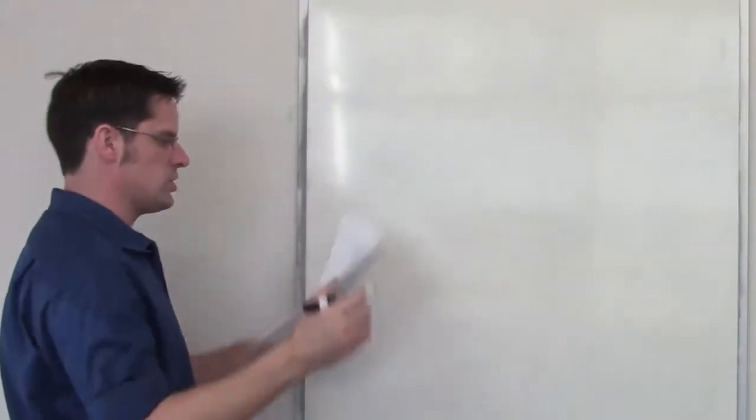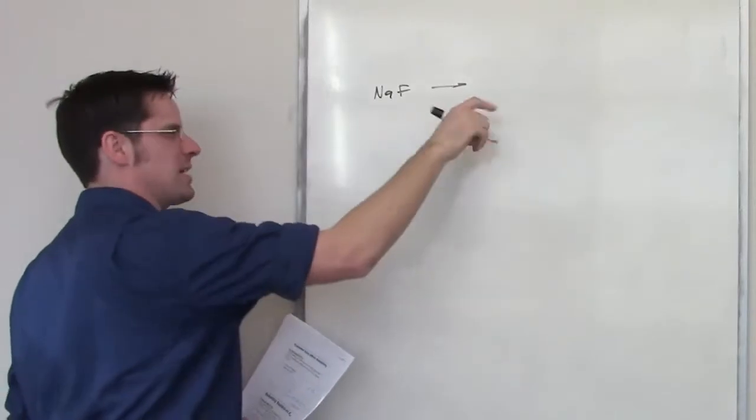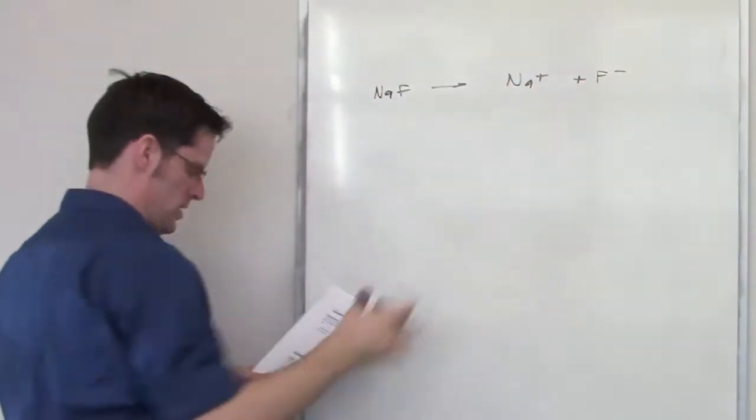In this question, I've got a solution of sodium fluoride. It is a strong electrolyte, which means it will dissociate completely to yield sodium plus and fluoride minus in a 1 to 1 ratio.